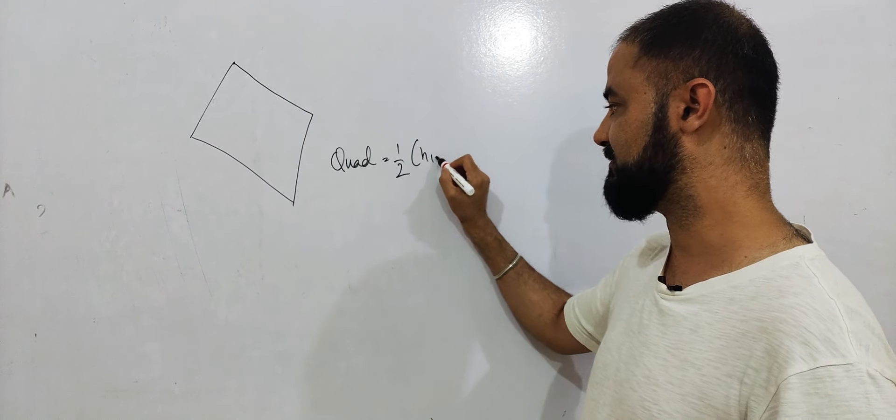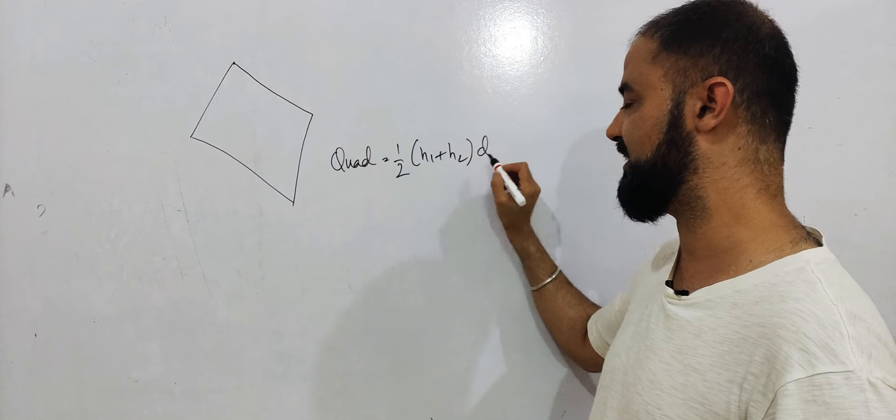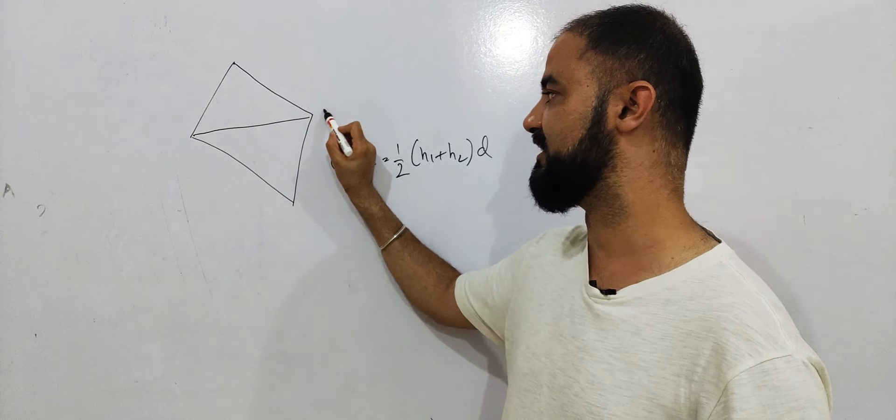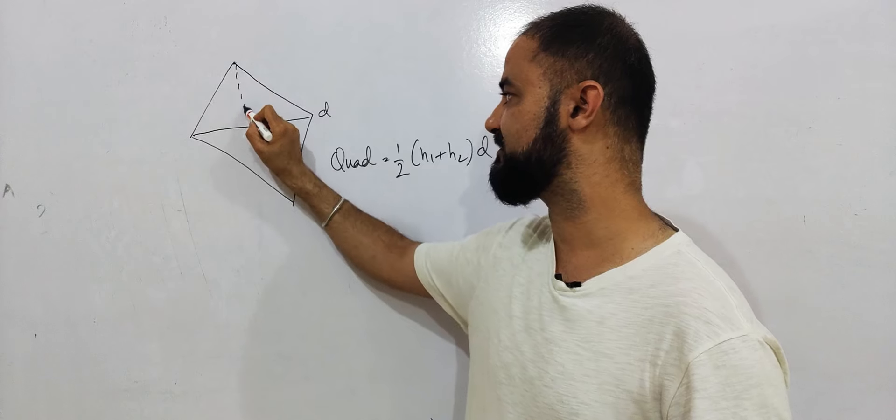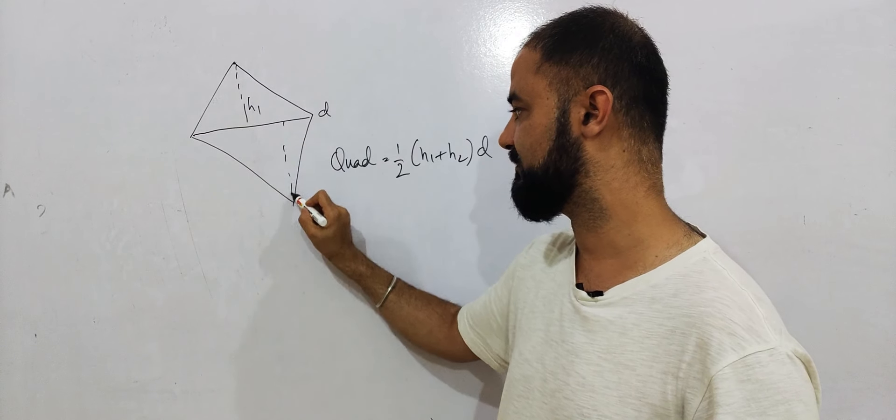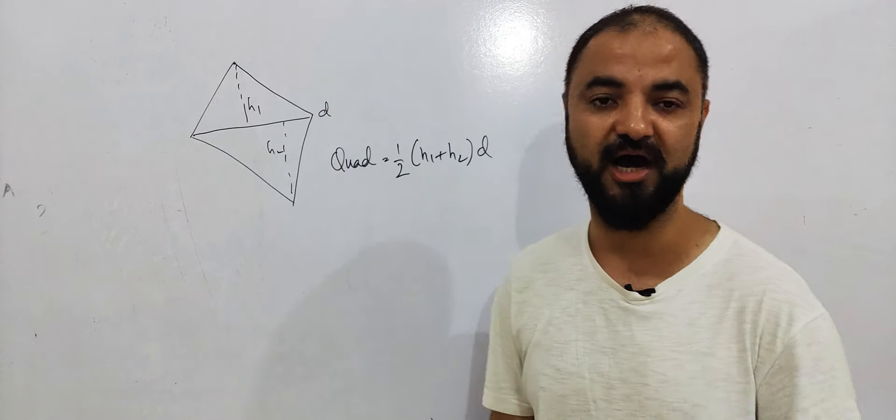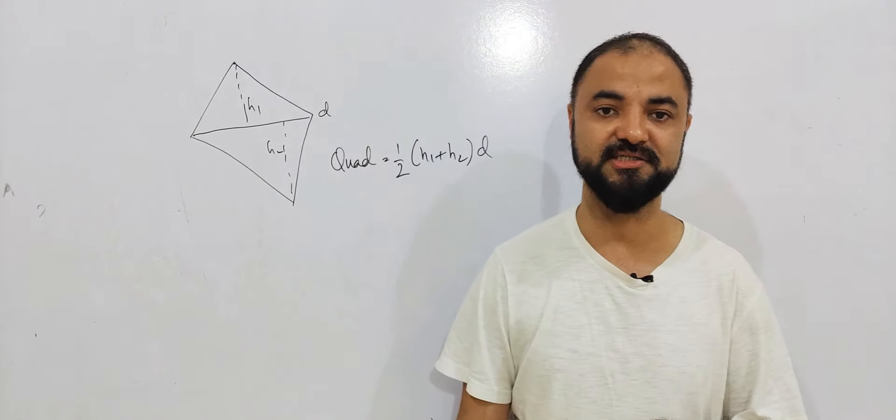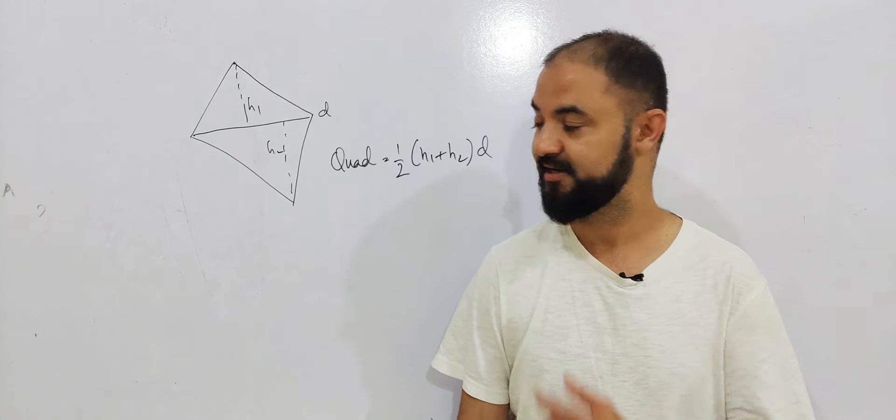Half of H1 plus H2 into D. So if this is a diagonal D, this is half the sum of the perpendiculars H1 and H2. Half the sum of the altitudes or perpendiculars into D is the area of the quadrilateral.